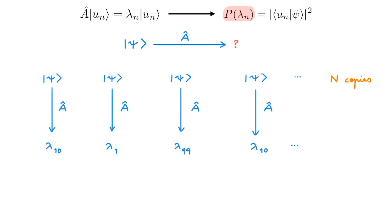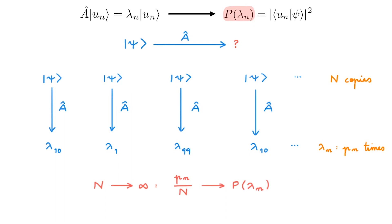Let's say that we get eigenvalue λn a total of Pn times. Then what postulate 4 is telling us is that when the number of copies n of the system becomes very large, the fraction of measurements that give λn — which is Pn over n — approaches the probability P(λn). Put another way, quantum mechanics tells us the exact rate at which we will get a particular outcome when we have an infinite number of copies of the same exact system. If we just have one copy of the system, all we can know is the probability of getting a particular outcome.